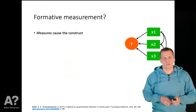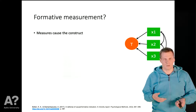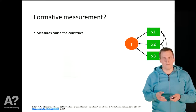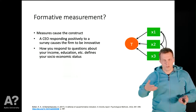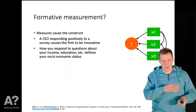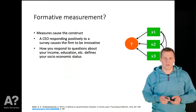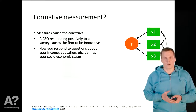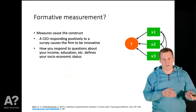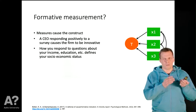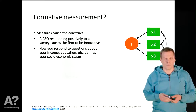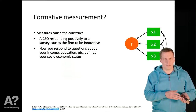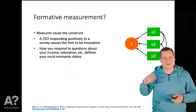The problem is that the literature doesn't really explain what it means that the measure causes the construct. If we take this literally, it would mean that when a CEO responds positively to a question about innovativeness, that causes the company to be innovative — which is clearly implausible. Another commonly used example is socioeconomic status: how income, education, and other things define it. How you respond to questions has certainly no causal effect on your socioeconomic status.